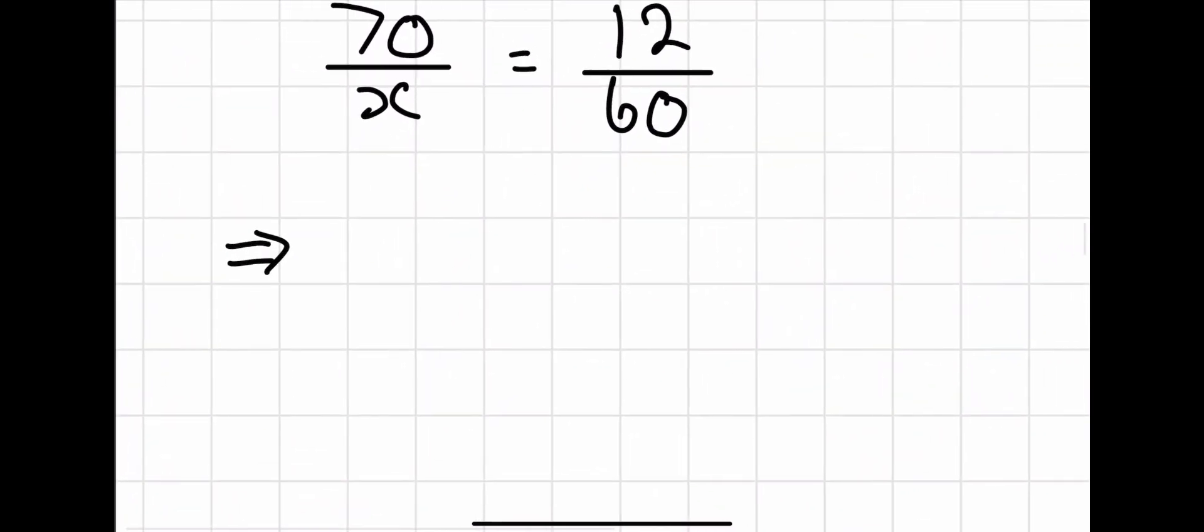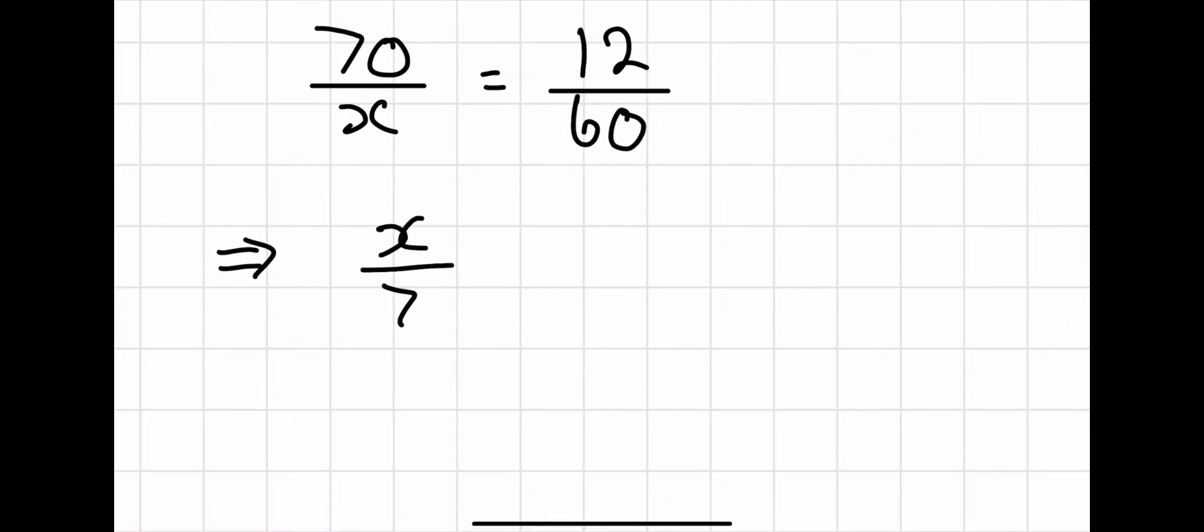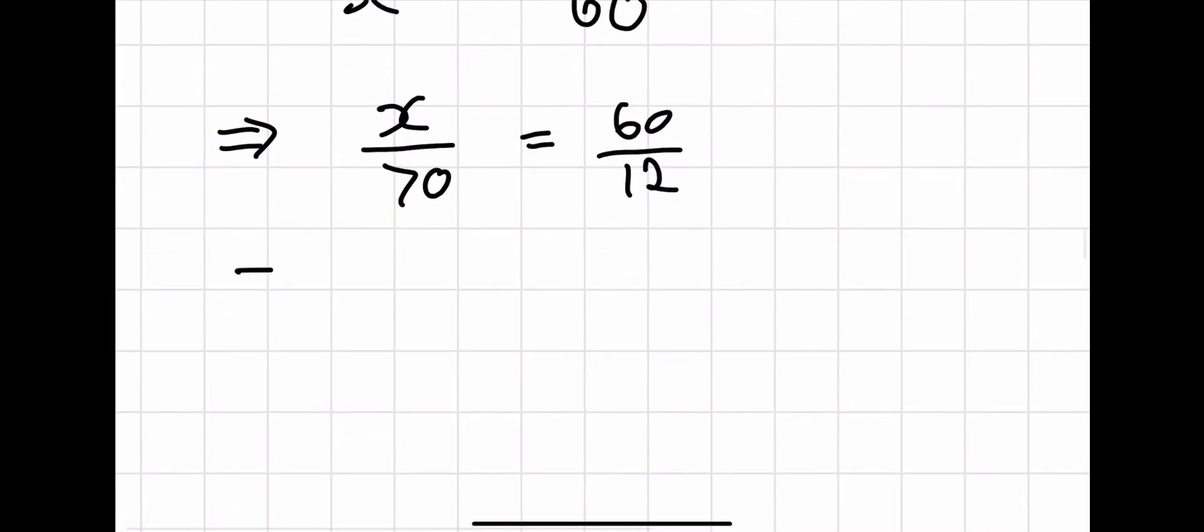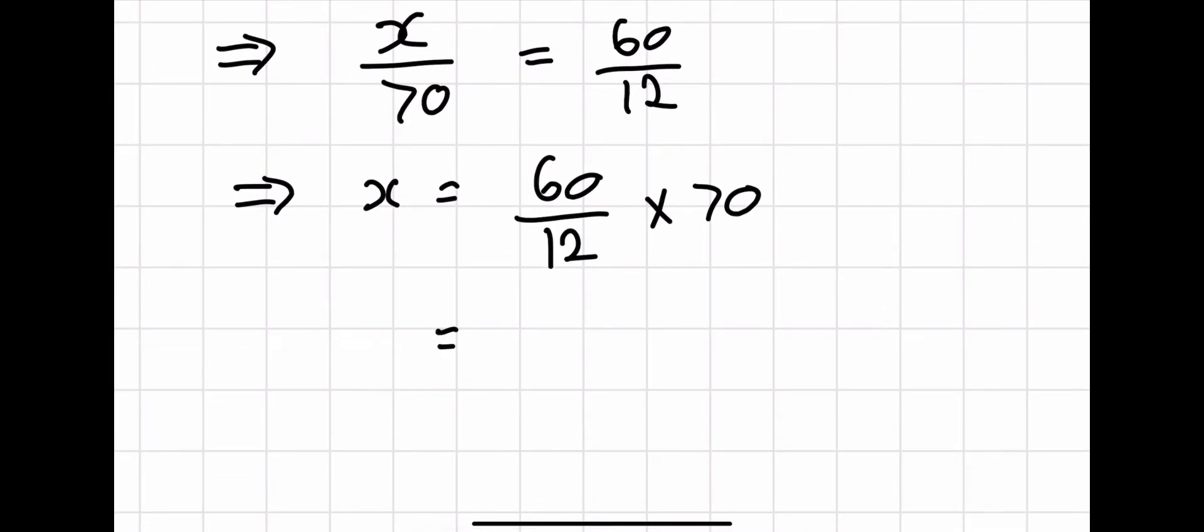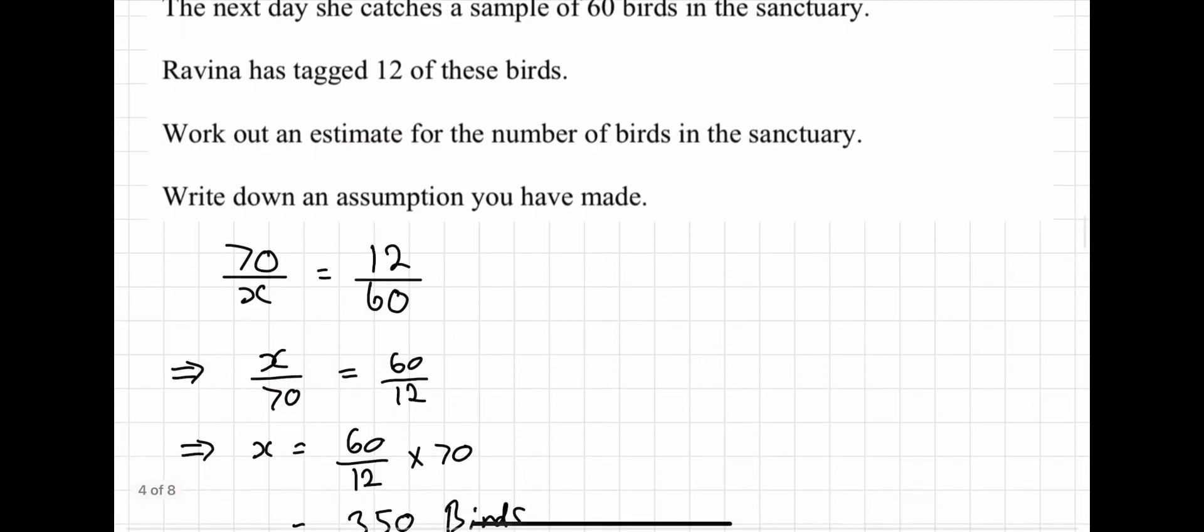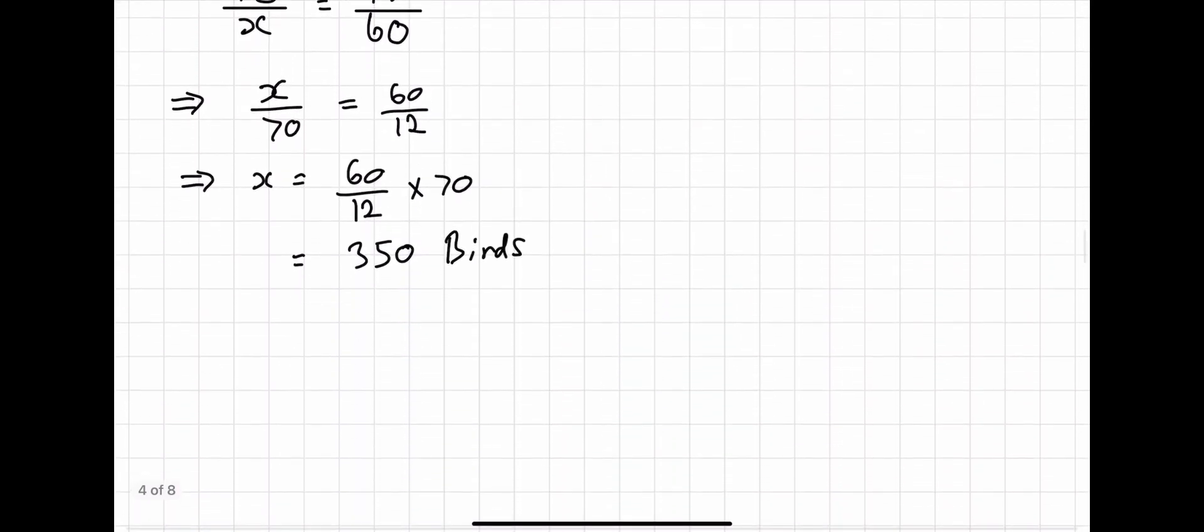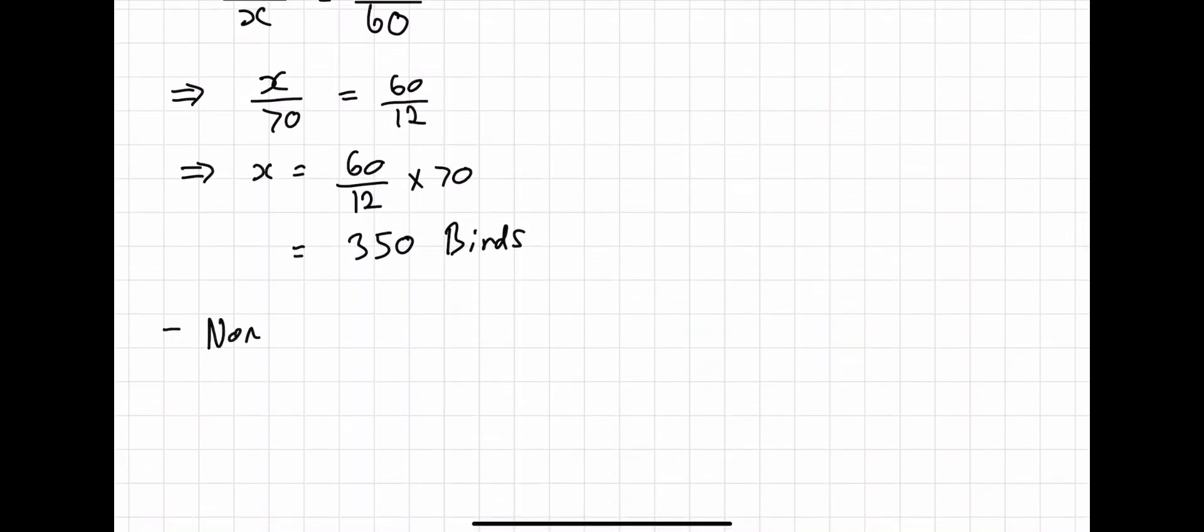Now we need to try to use this to find our total population. So, I'm going to flip the fractions around. So, I have x over 70 equals 60 over 12. And then I'm going to times both sides by 70. So, x equals 60 over 12 times 70. Now I'm going to go to my calculator and write 60 over 12 times 70. And I'm going to get 350 birds as my estimated population. Write down any assumption you have made. My assumption this time, I'm going to write a different one. None of the tags fell off.